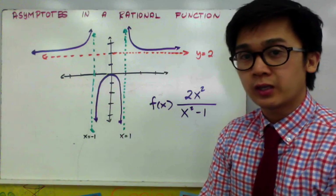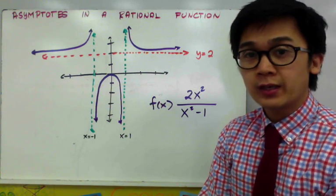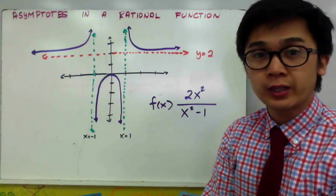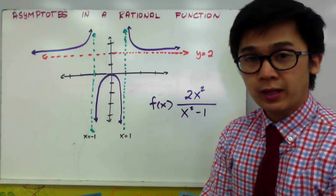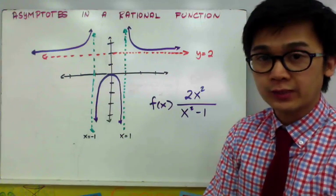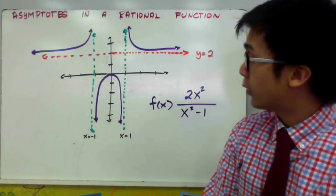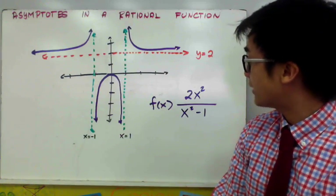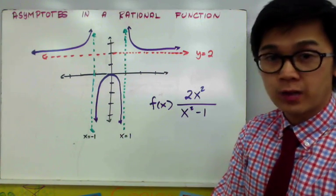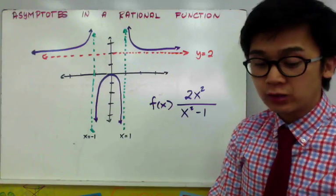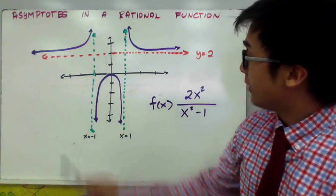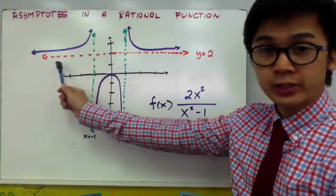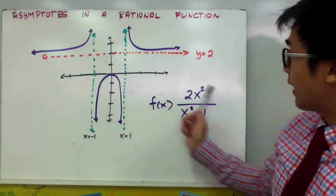One of the many unique features of a rational function is the existence of its asymptotes. Today we're going to learn how to find the vertical and the horizontal asymptote of a given rational function. On the board, you are seeing the graph of a rational function given by f(x) = 2x² / (x² - 1). In this particular rational function, we have two vertical asymptotes and one horizontal asymptote.